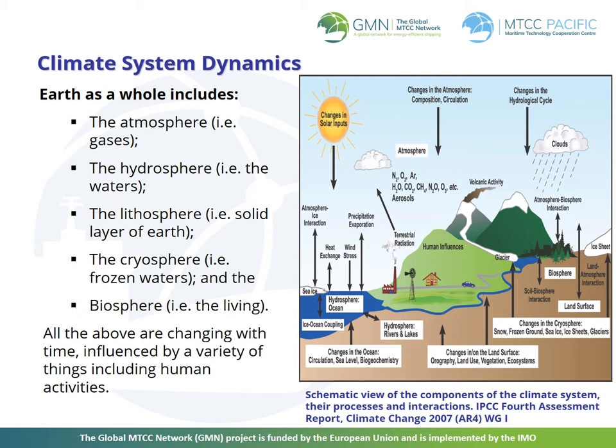The climate is a whole system which combines numerous interactions and retroactions between various complex subsystems: the atmosphere, oceans, land, ice and snow, and living creatures including human beings and their activities. (IPCC 2007.) The dynamics of the Earth's climate are impacted on by the alteration of each of the following systems: the atmosphere (gases), the hydrosphere (waters), the lithosphere (solid layer of Earth), the cryosphere (frozen waters), and the biosphere (the living).